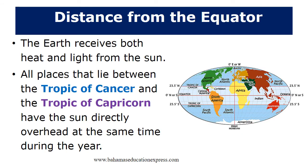Distance from the equator: The Earth receives both heat and light from the sun. All places that lie between the Tropic of Cancer and the Tropic of Capricorn have the sun directly overhead at the same time during the year.